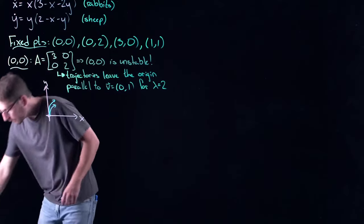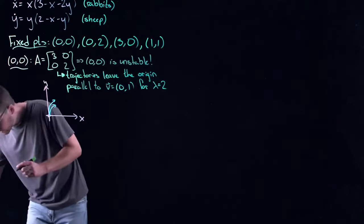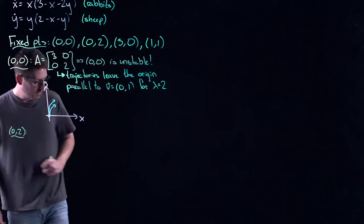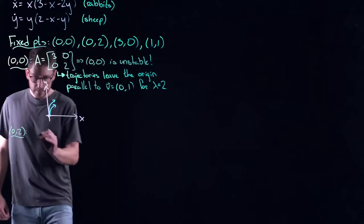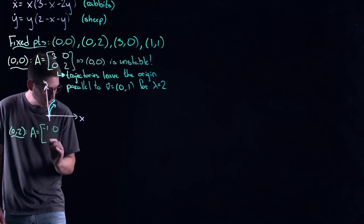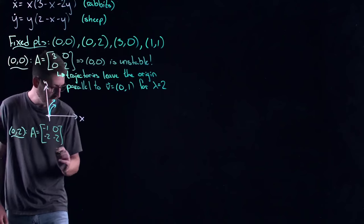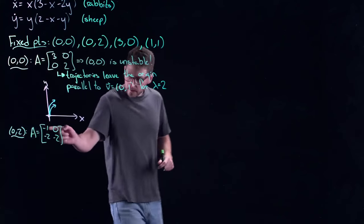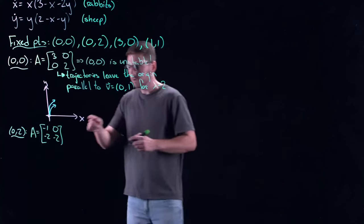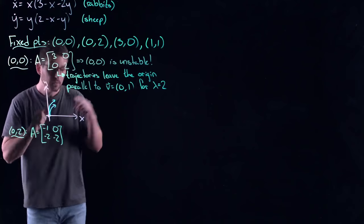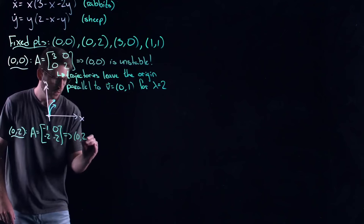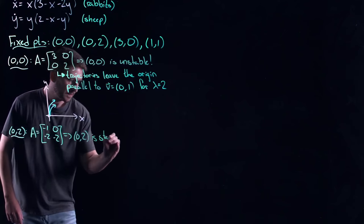Let's do (0, 2) next. The Jacobian matrix evaluated at this fixed point is a lower triangular matrix: minus 1, 0, minus 2, minus 2. Its eigenvalues are on the diagonal: minus 1 and minus 2. Both have negative real part, which tells us that (0, 2) is stable.